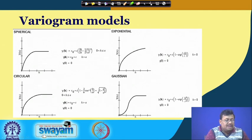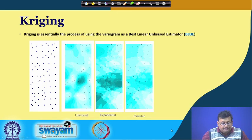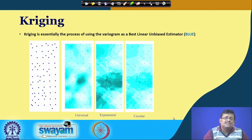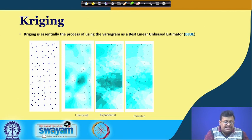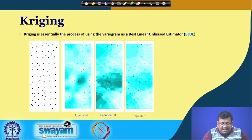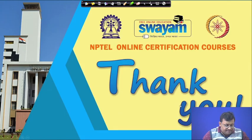There are several variogram models: spherical, exponential, circular, and Gaussian, each with their own mathematical functions. Based on the spatial dependence modeled through the semi-variogram, Kriging interpolates values at unsampled locations. Using different types of Kriging — universal Kriging, exponential Kriging, circular Kriging — we can produce interpolated maps, for example clay content maps.